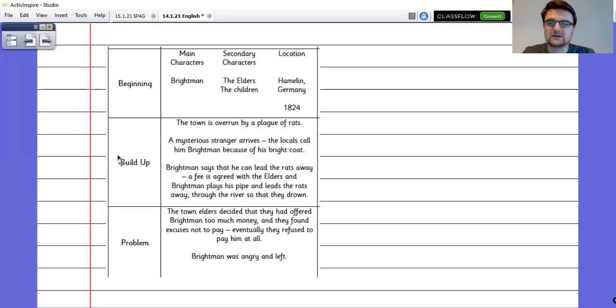We found out that the town is overrun by a plague of rats so that's almost the first part of the problem but it's not the problem that ends up being the focus of the story. We find out that the mysterious stranger arrives, they agree a fee, Brightman says that he can lead the rats away and then he does, he plays his pipe and the rats all follow him. And the problem is that the town elders decided they didn't want to pay Brightman. They decided they hovered off him too much money and eventually they refused to pay him at all. So Brightman is angry and left.